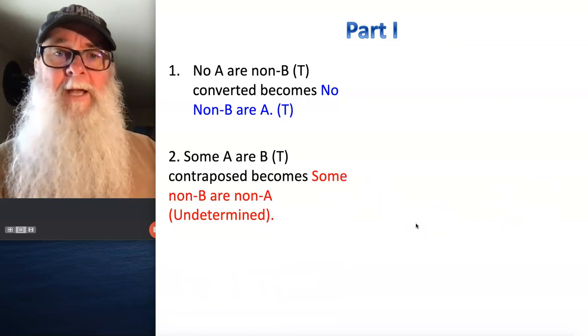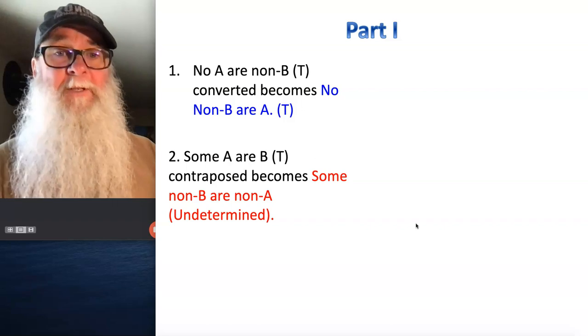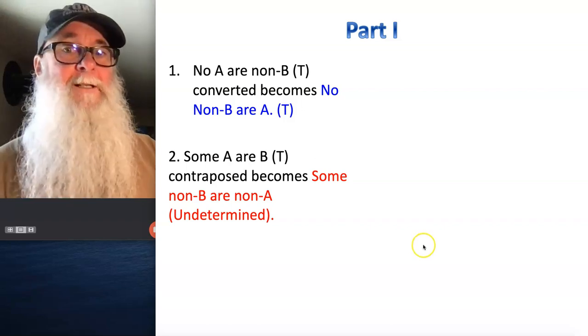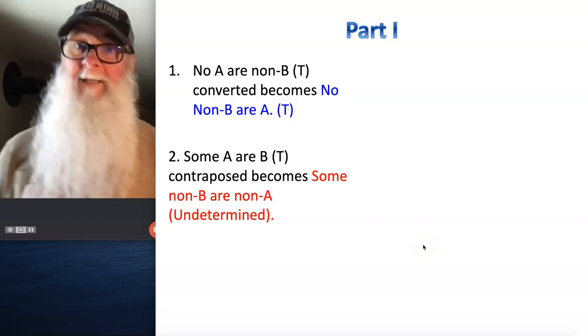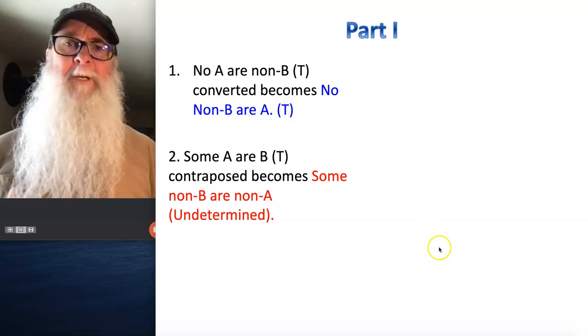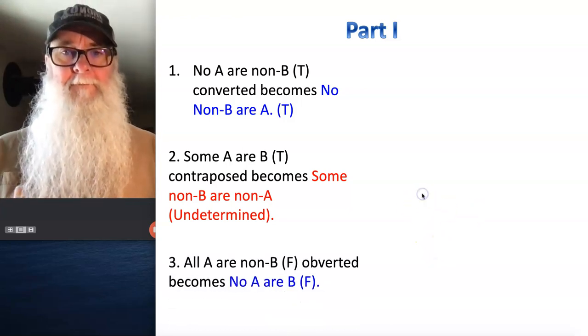Number two: some A or B, true. Contraposed, it becomes some non-B or non-A. But our new statement is undetermined, because we're not allowed to contrapose I claims.